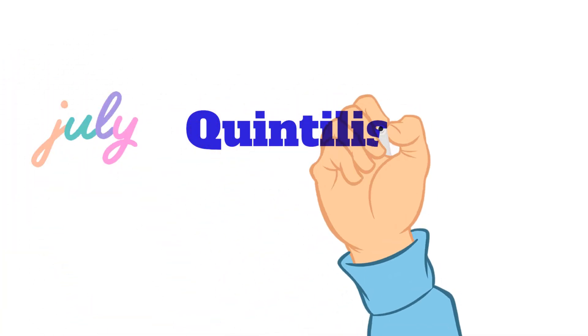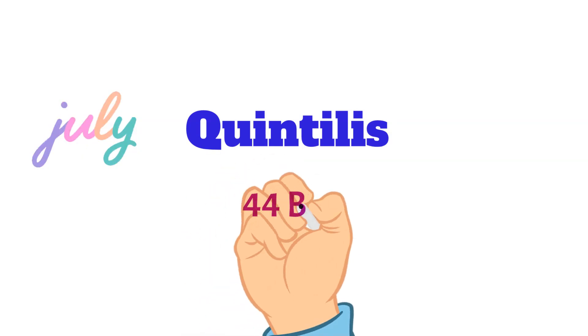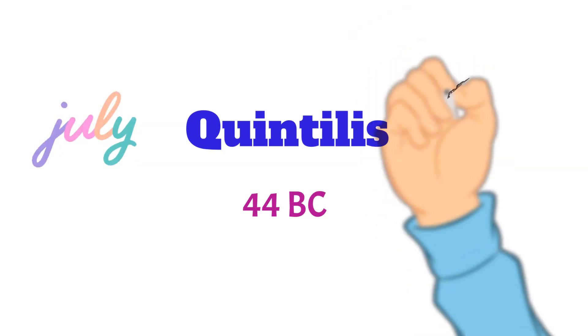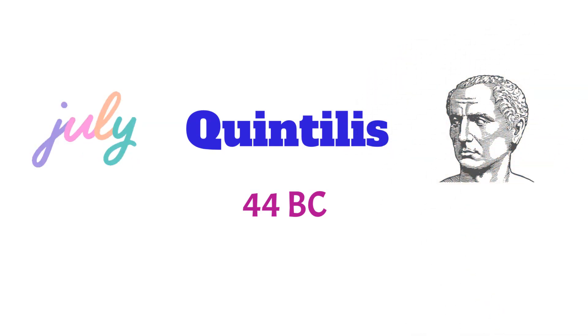Before Julius Caesar's time, the month of July was known as Quintilis in Latin, meaning the fifth month in the Roman calendar. However, in 44 BC, the Roman Senate renamed the month Julius in honor of Julius Caesar, who was born on July 12th. This renaming occurred after Julius Caesar's assassination.